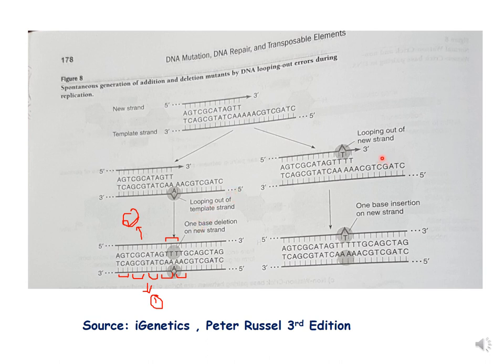This picture from Russell's book shows looping out of the new strand, which results in addition, and looping out of the template strand, which results in deletion. I hope you have understood spontaneous mutation — you can refer to different books for this. Thank you, students, and we will meet in the next lecture.